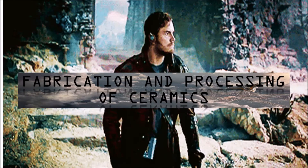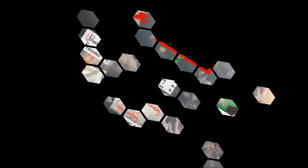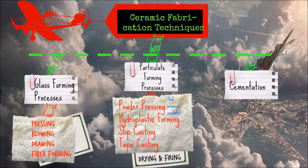Now let's head on to the fabrication and processing of ceramics. Here is a table showing the different ceramic fabrication techniques. We have glass-forming processes, particulate processes, and cementation. For glass-forming, we have four techniques: pressing, blowing, drawing, and fiber-forming.